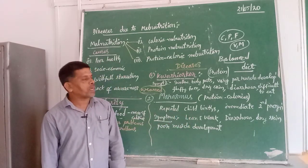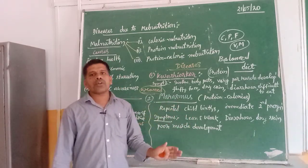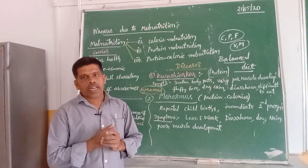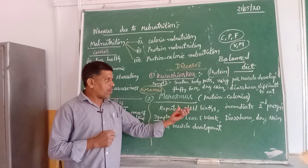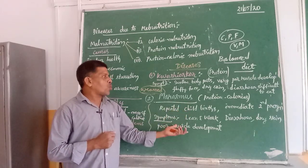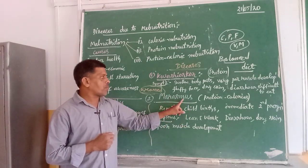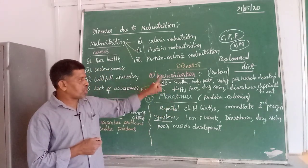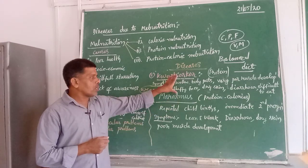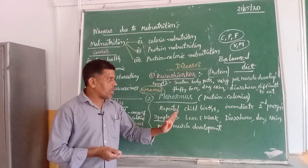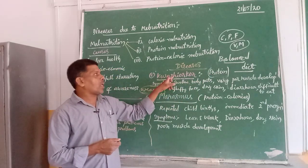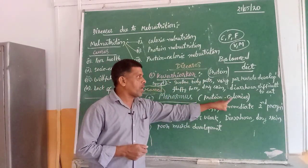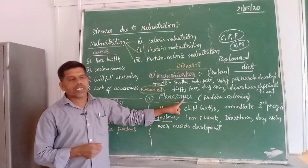Dry skin is another common symptom, along with poor muscle development. To avoid Marasmus, we need to keep a proper gap between the first and second child so that the first child is given proper food by the mother. These two diseases — Kwashiorkor and Marasmus — are not permanent diseases. If the child is given required quantities of proteins, Kwashiorkor can be avoided. If given required quantities of proteins and calories, Marasmus can be avoided.